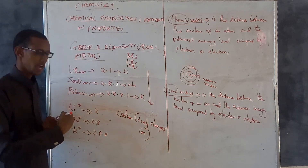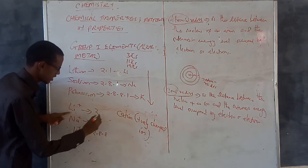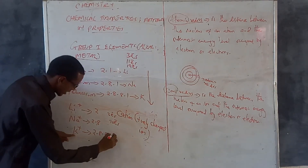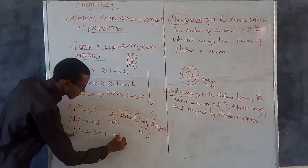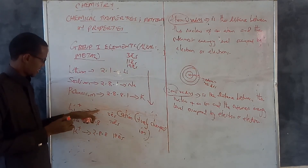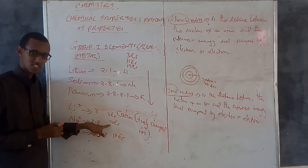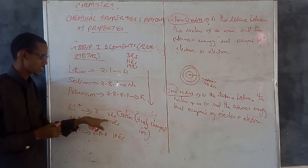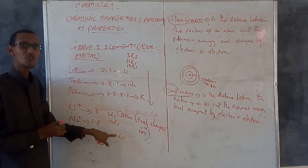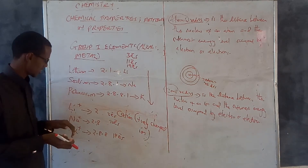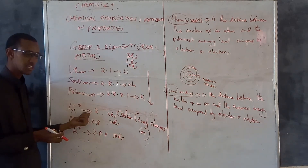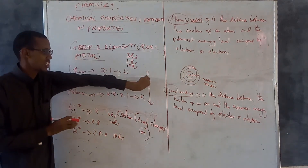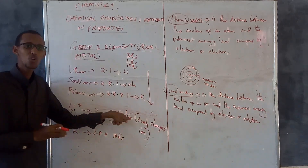Similarly for the ions: lithium ion has 2 electrons, sodium ion has 10, and potassium ion has 18. As you go down the group, the number of electrons in the ions are also increasing. This similarly increases the number of occupied energy levels. Therefore, as you go down the group, the ionic radius also increases. Both atomic radius and ionic radius increase down the group.